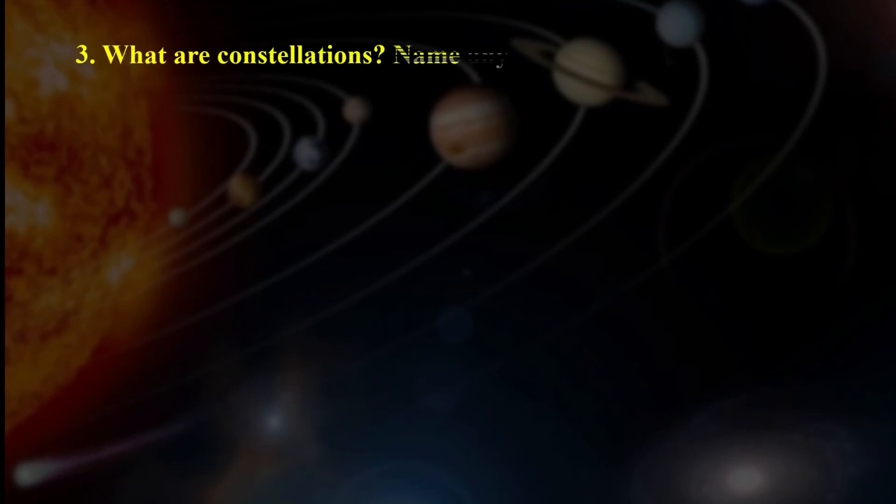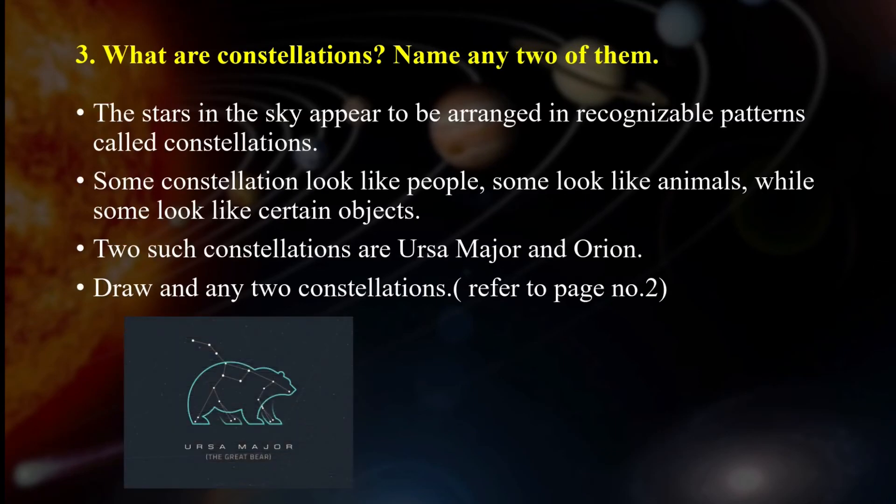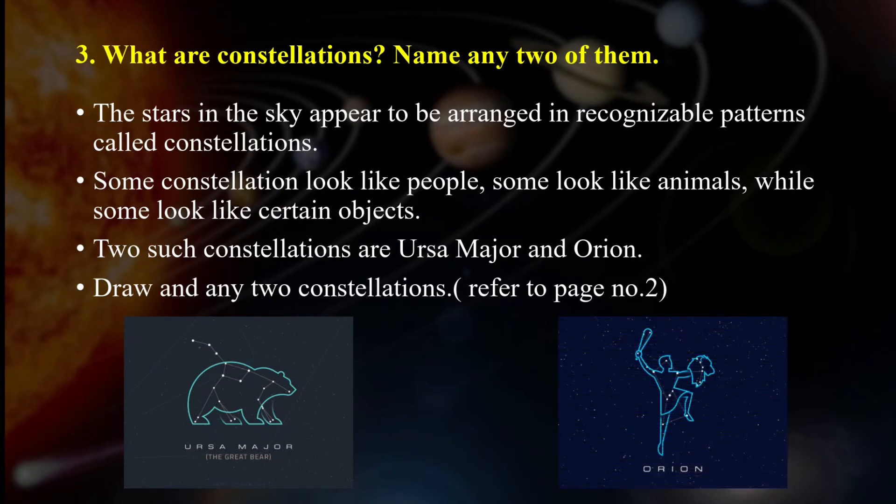Next, what are constellations? Name any two of them. What are constellations? The stars in the sky appear to be arranged in recognizable patterns which are known as constellations. Some constellations look like people, some like animals, while some look like certain objects. Two such constellations are Ursa Major and Orion. You need to also draw the diagram of Ursa Major and Orion which is also given in your books.